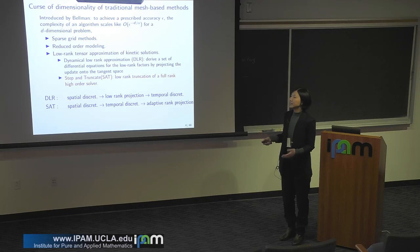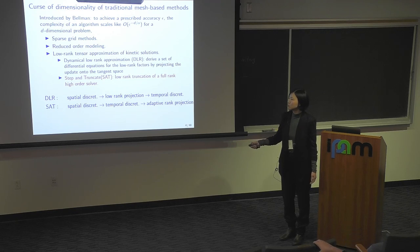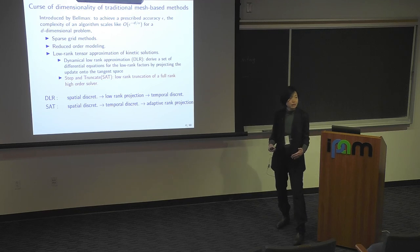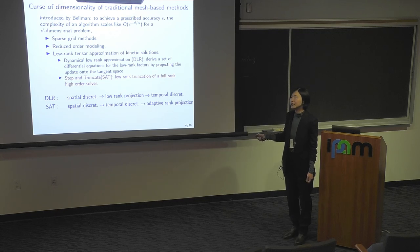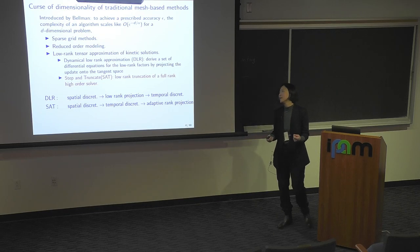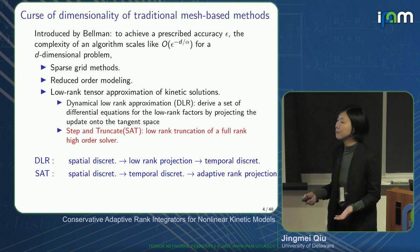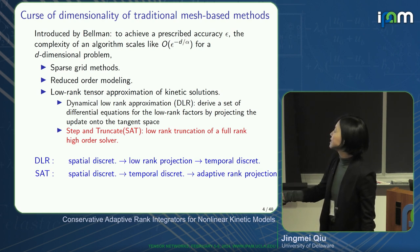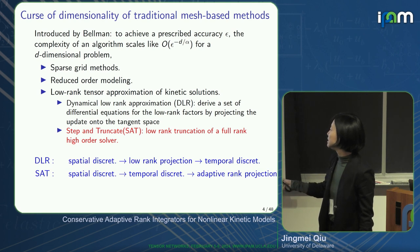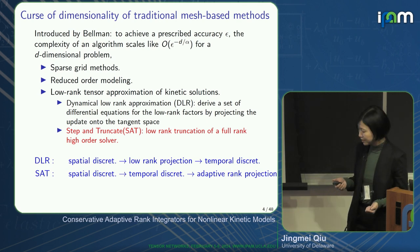What we propose — the approach our group has been adopting — is what we call step and truncate. It comes from the traditional grid-based method. We perform a method-of-lines discretization: first spatial discretization, then temporal discretization to get a fully discretized system. Instead of updating solutions element by element, we assert that the solution could be of low rank and look for the basis from each dimension and find the coefficients. The dynamic low-rank approach, by contrast, starts from spatial discretization, performs low-rank projection, then temporal discretization, which is associated with some operator splitting error.